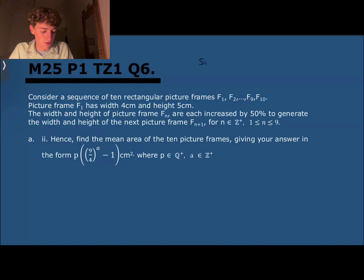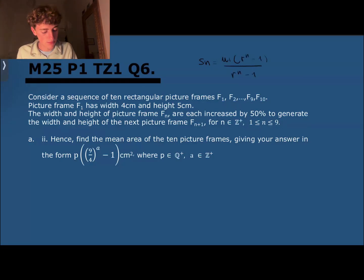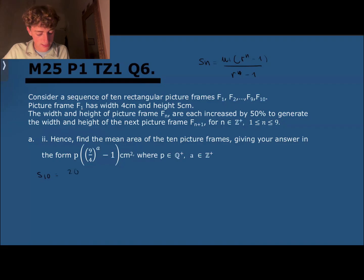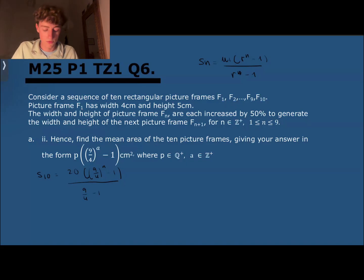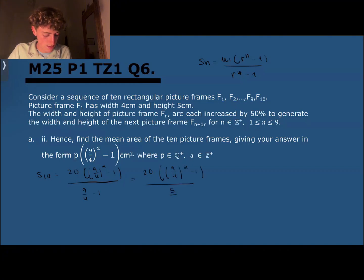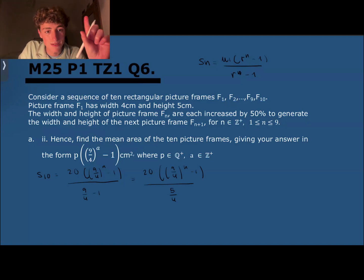The formula is u1 times (r to the power of n minus 1) over (r minus 1). Applying that here, S(10) equals 20 times (9/4) to the power of n minus 1, over (9/4 minus 1). We can simplify 9/4 minus 1: since 1 is 4/4, this becomes 5/4. So we have 20 divided by (5/4), which means multiplying by 4 and dividing by 5 — giving 16. So it's 16 times (9/4) to the power of n minus 1.